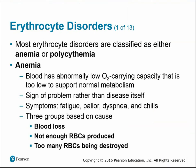Most erythrocyte disorders are classified as either anemia or polycythemia. Anemia is an abnormally low oxygen-carrying capacity too low to support normal metabolism — generally a sign of another greater problem rather than a disease in itself. Symptoms include fatigue, pallor (a pale ghost-like appearance), dyspnea (difficulty breathing), and chills. The three groups of anemia are based on underlying cause: blood loss, insufficient red blood cell production, or too many being destroyed faster than they can be replaced.